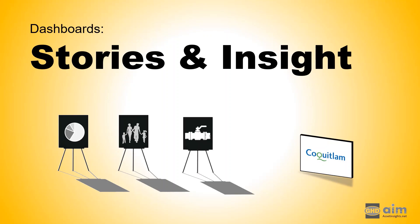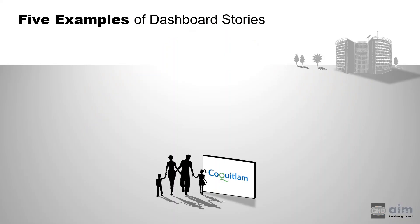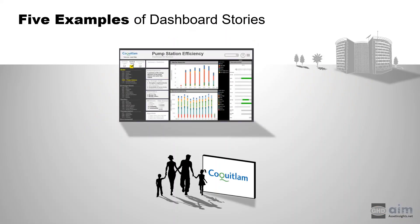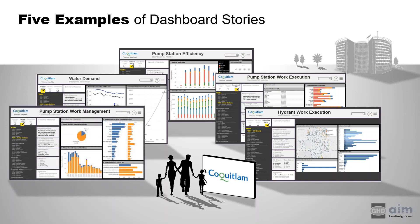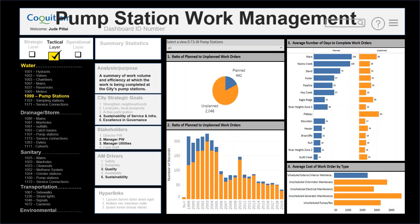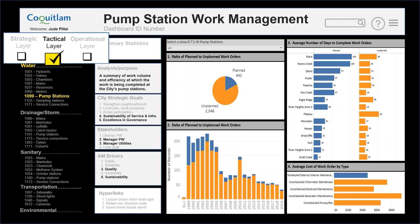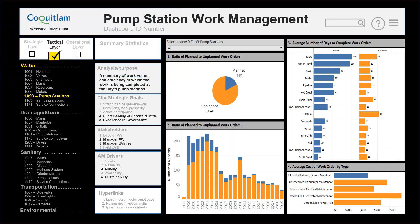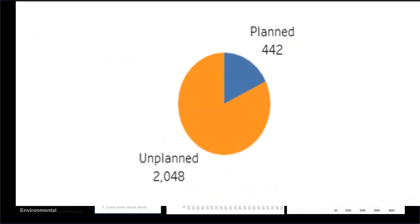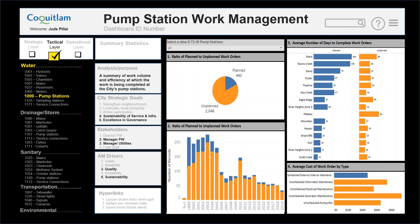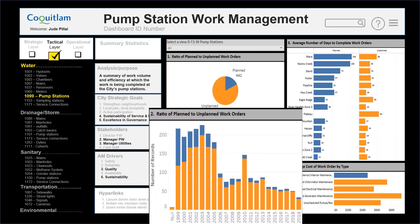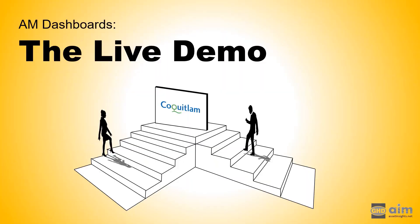Stories are conveyed through a structured arrangement of windows in the dashboard, and the sequence unfolds to provide insight to the user. We will explore five examples of dashboard stories: two are strategic in nature, two are tactical, and one is operational. Our first dashboard story is about pump station work management — a tactical level story. The dashboard contains four panels of business intelligence, beginning by revealing the global ratios of planned to unplanned work orders, then providing a detailed yearly breakdown.